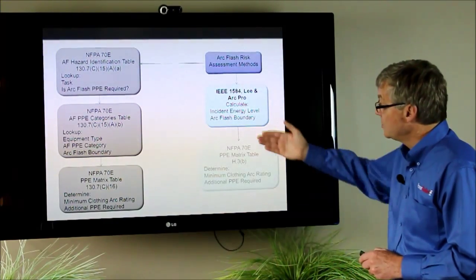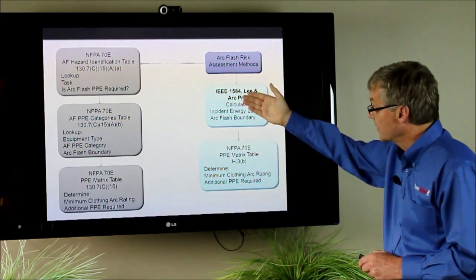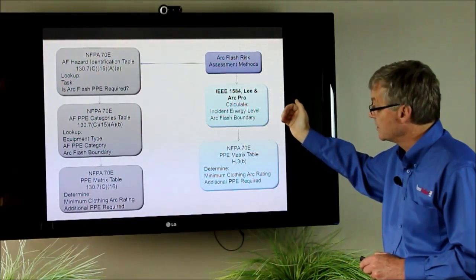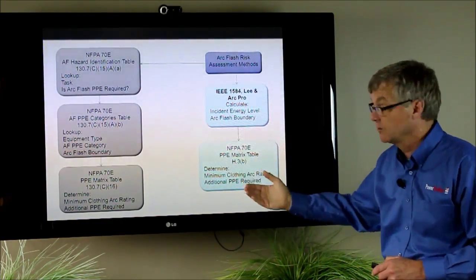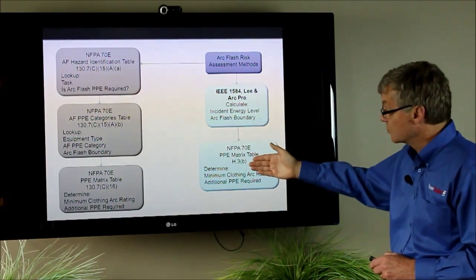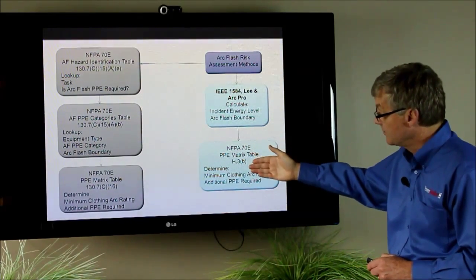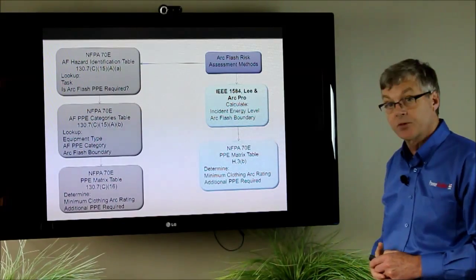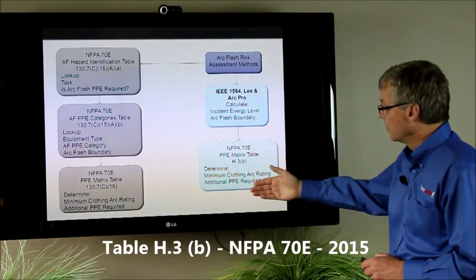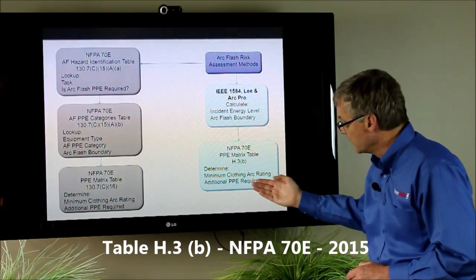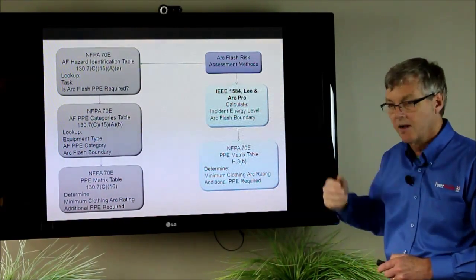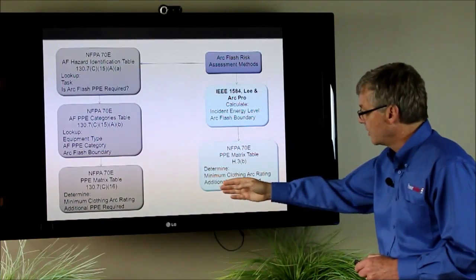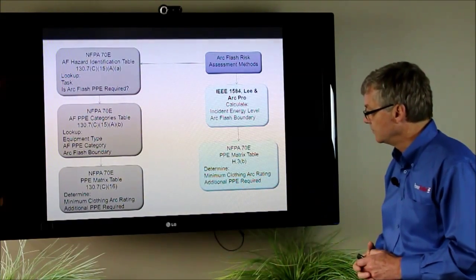And once you have determined using one of these three methods, the incident energy and the arc flash boundary, then you go to a different PPE matrix table in 70E. This one's in the back in the annex section and you go to table H.3B. There you'll look up what your minimum clothing rating is going to be based on the value you've calculated. There's three different levels and then also it'll tell you what additional PPE you have to wear.